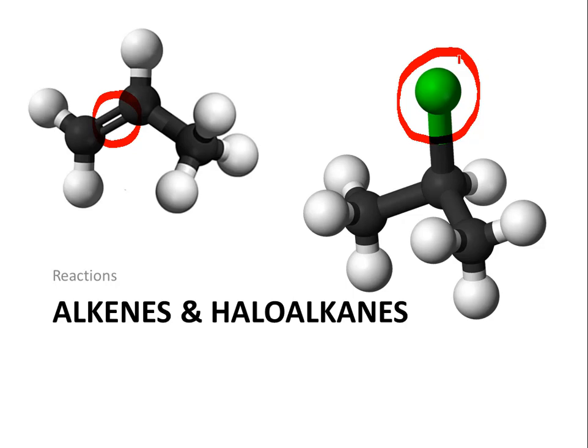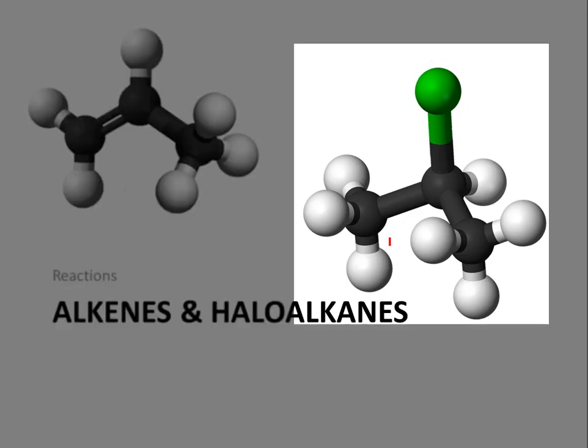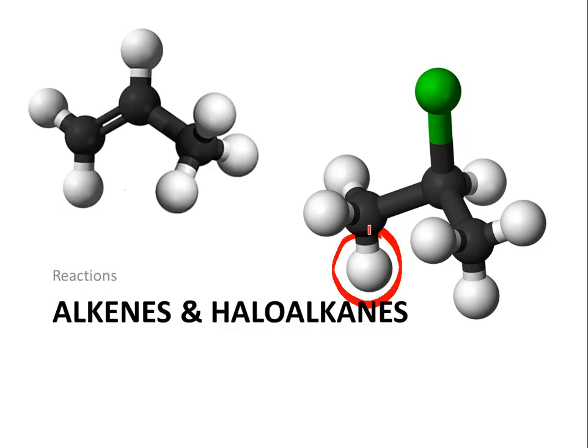To convert from an alkene to a haloalkane, you have to get rid of the double bond and add the halogen. Also notice that the haloalkane has one more hydrogen atom, so converting from an alkene to a haloalkane requires adding that hydrogen, and the reverse requires removing it.